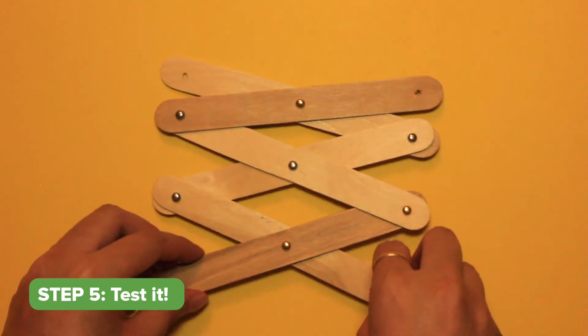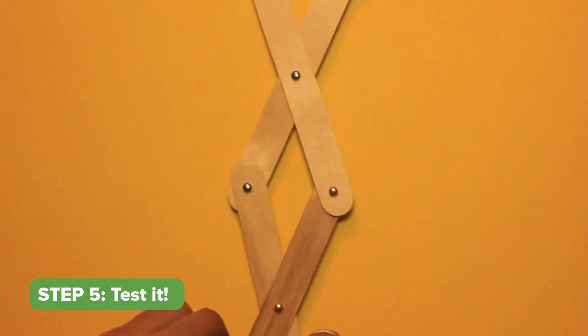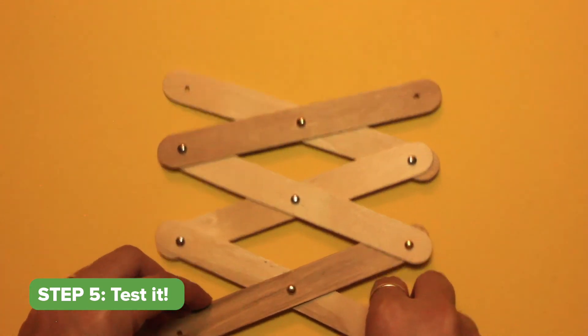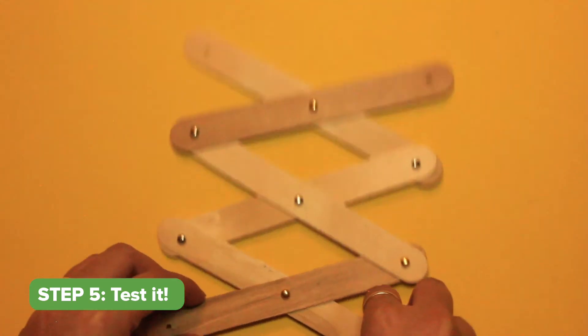Step 5. Test out your robotic arm grabber by opening and closing one end of the mechanism. It should extend and retract.